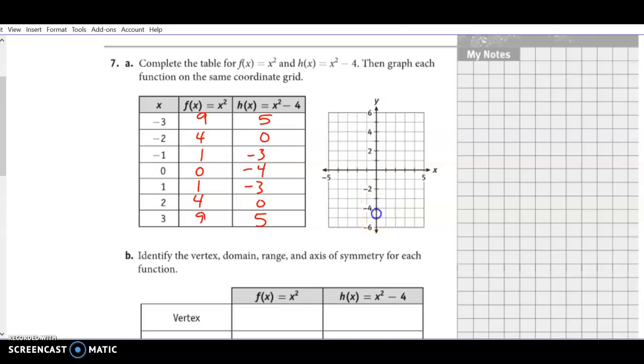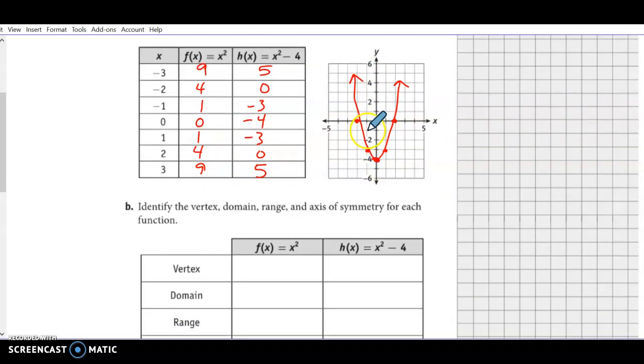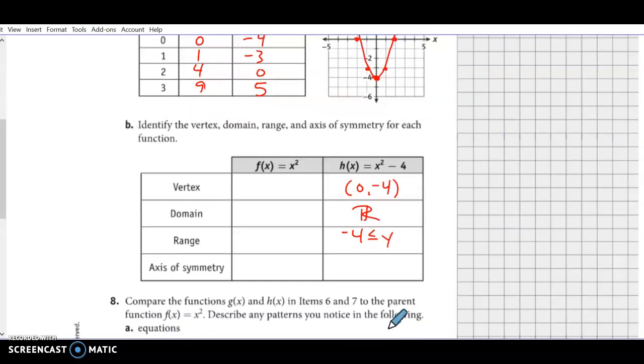So now we're coming down here to negative 4, over 1, up 1, over 2, and up 4. It's always going to be that counting principle we talked about with our parent function. Now we can see that our vertex is at (0, negative 4). Domain is still all real numbers. Negative 4 is less than or equal to y. And our axis of symmetry is still 0.